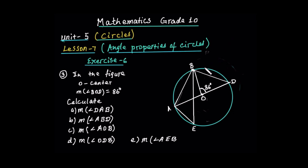Okay, so this is the figure that we have here. Given information: angle — central angle — because O is center. The figure O is center, and the measure of angle DOV is equal to 86 degrees. So it's a central angle. With this given information,